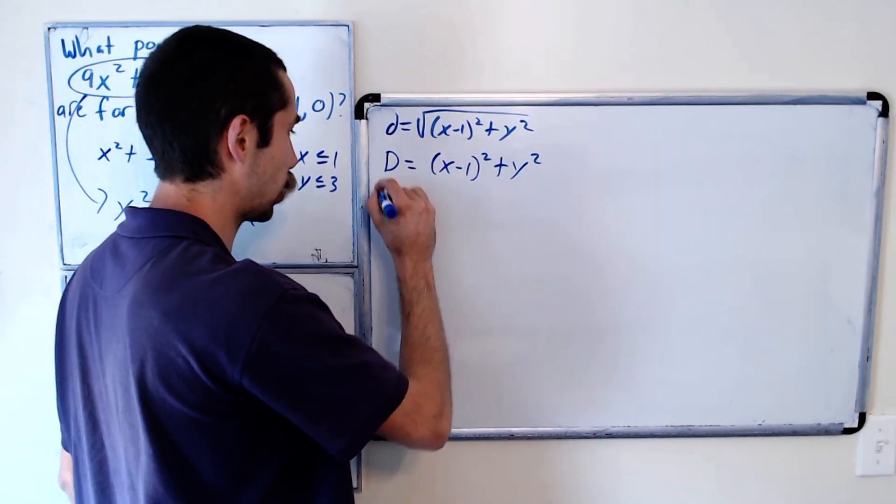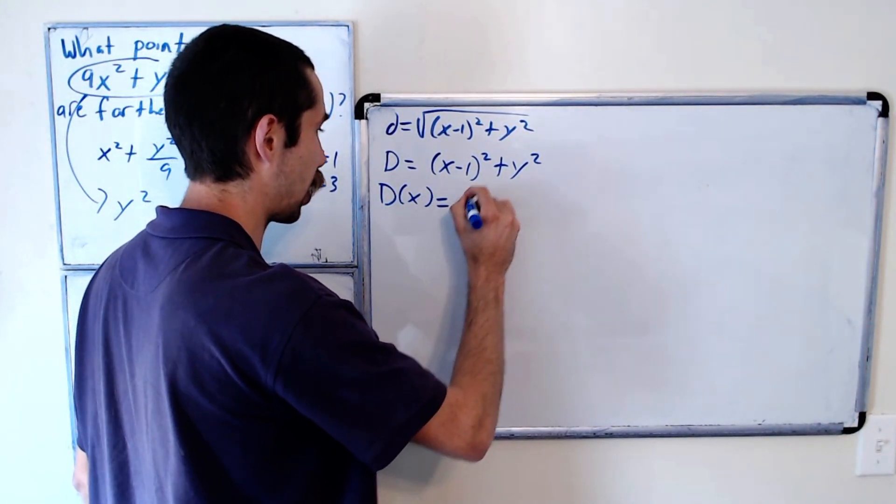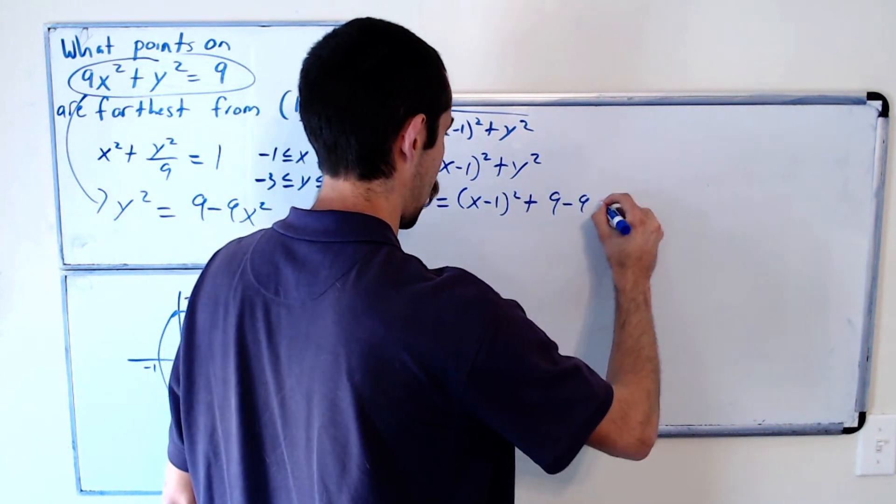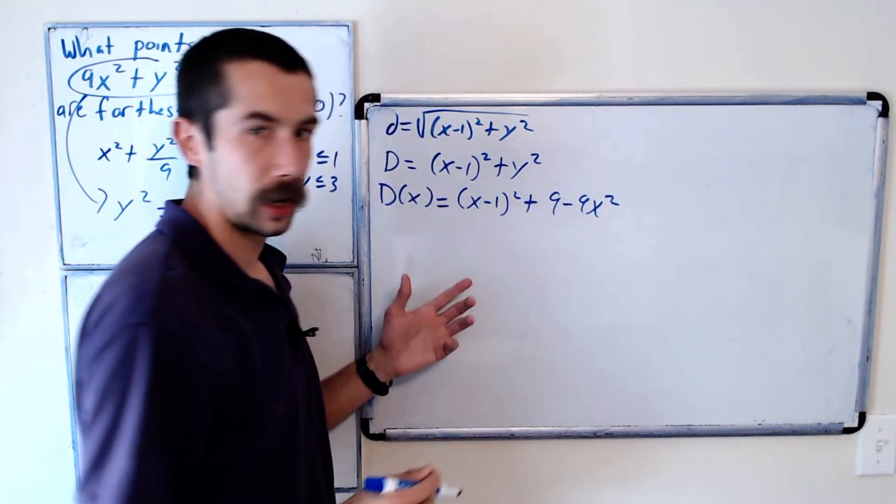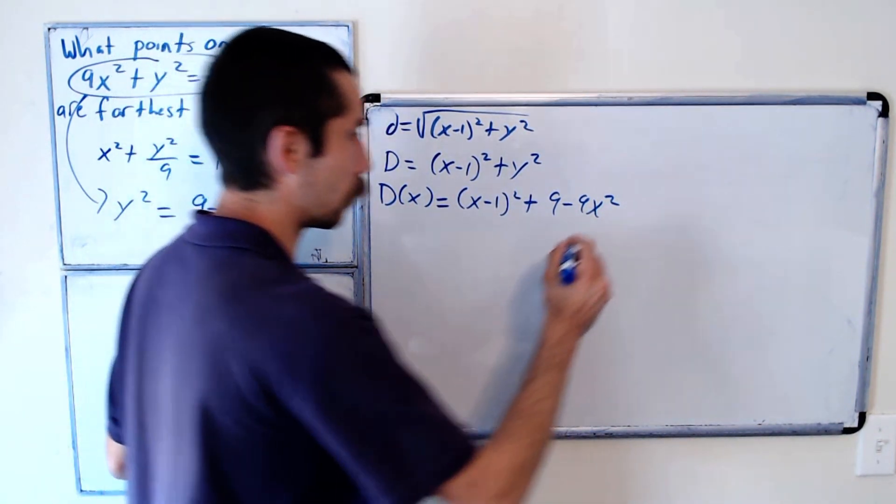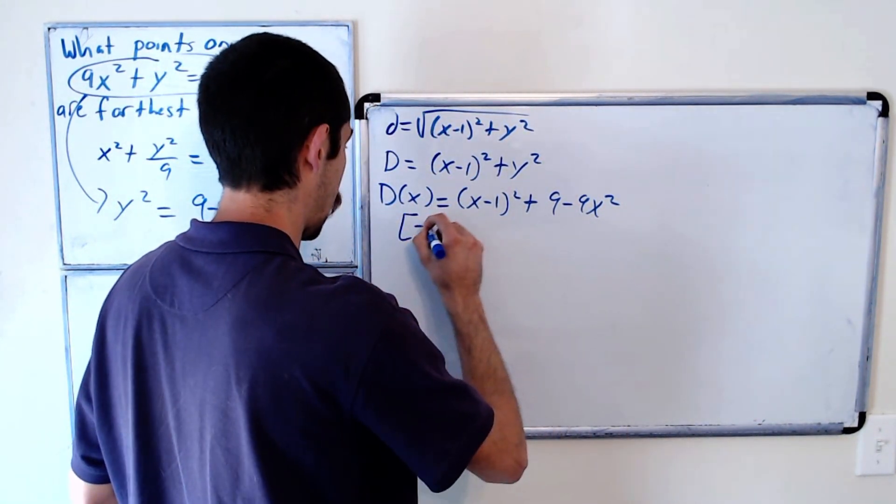So our function D(x) in one variable is (x minus 1) squared plus 9 minus 9x squared. And we want to find the absolute maximum value of this on the interval negative 1 to 1.